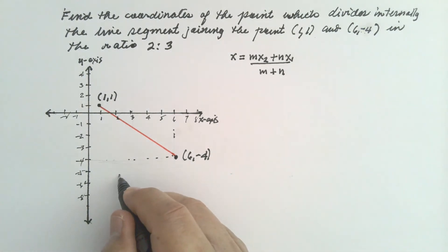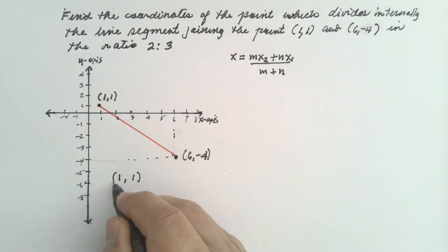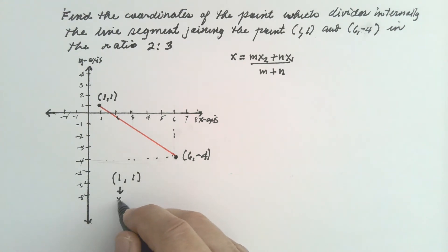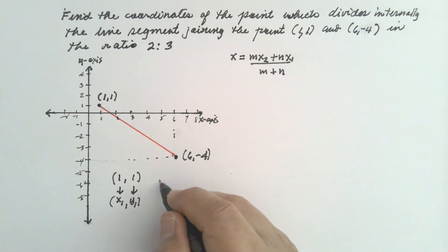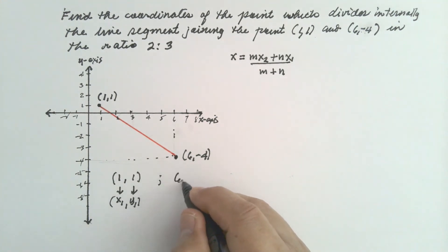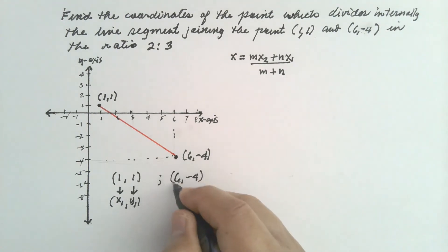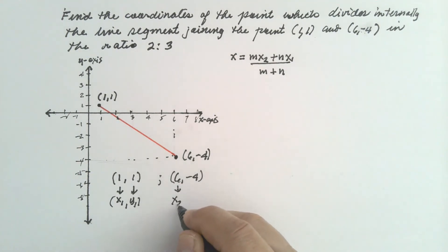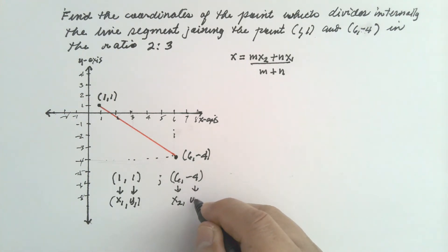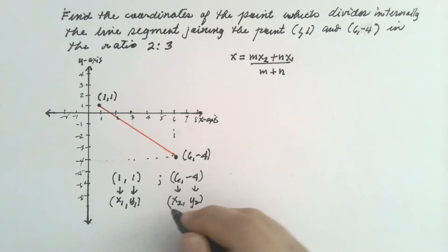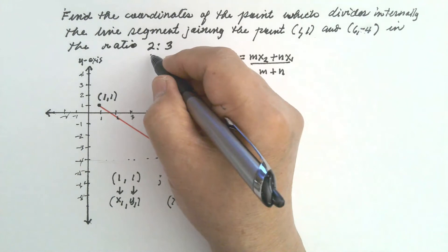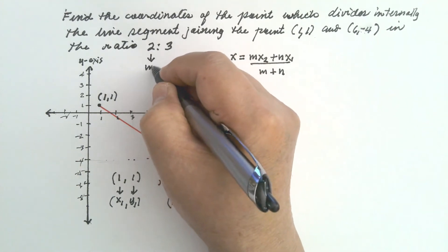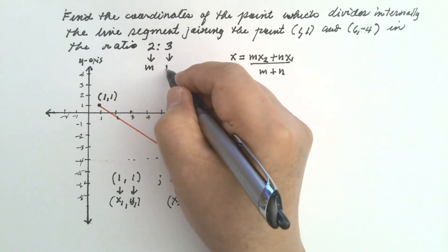Our first point is (1, 1). Let this be our x₁ and y₁. The second point is (6, -4). Let this be our x₂ and y₂. And then the ratio — let this be our m and n.